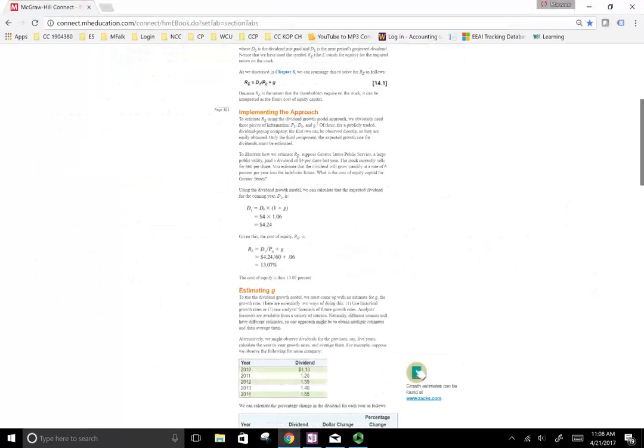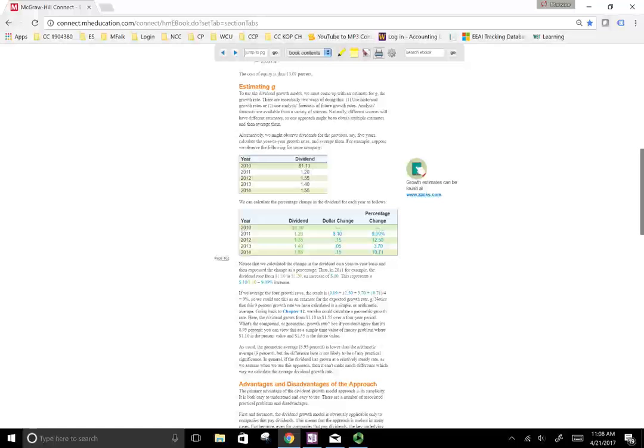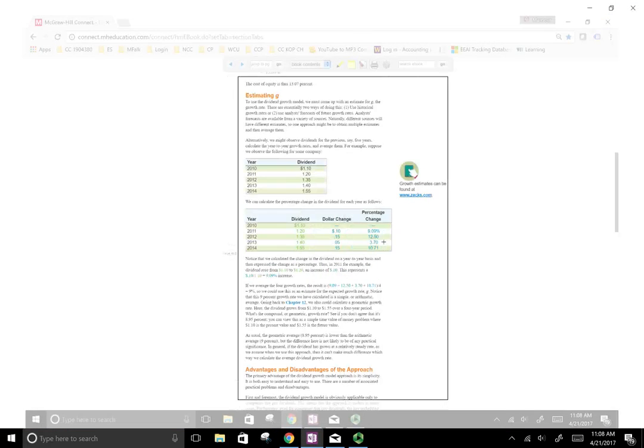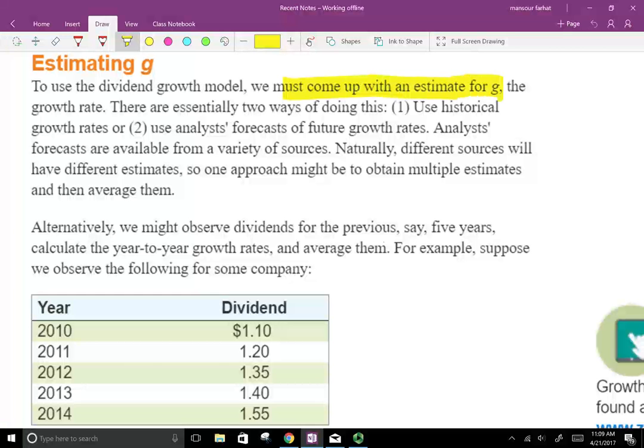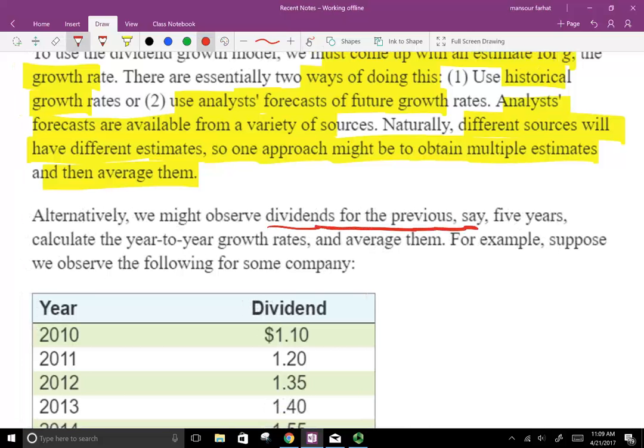Now let's talk about G because we looked at G but did not really cover it. G is the growth rate. How can you come up with the growth rate? For publicly traded companies, you might have some historical data. To use the dividend growth rate, we must come up with an estimate for G. There are essentially two ways of doing this: you could use historical growth rates or use analyst forecasts of future growth rates. An analyst forecast will be available from a variety of sources, and different sources will have different estimates. So one approach might be to obtain multiple estimates then average them. Or we could observe dividends from prior years - this is using the historical method.